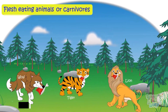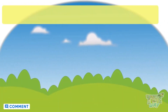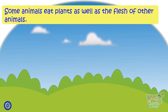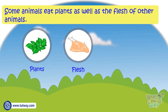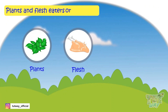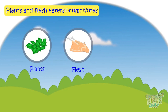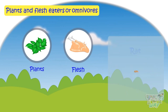Some animals eat both plants and flesh. These animals are called plant and flesh eaters, or omnivores. They eat both types of food items — plants as well as the flesh of other animals. Examples of omnivores are bears, rats, cats, and crows.